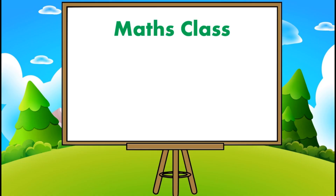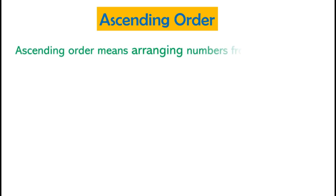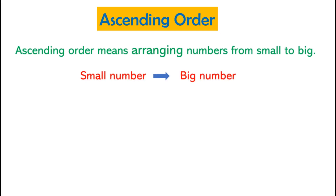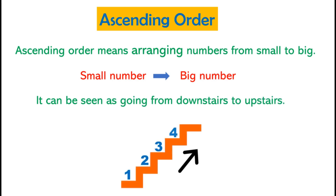Hello children, welcome to the maths class. Today we will learn ascending and descending order. Ascending order means arranging numbers from small to big. It can be seen as going from downstairs to upstairs. Remember that in ascending order, the numbers always keep on increasing.